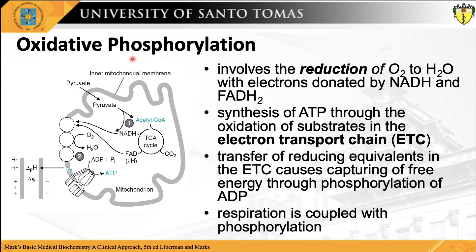Oxidative phosphorylation, on the other hand, involves the reduction of oxygen to water with electrons donated by NADH and FADH2. This type of phosphorylation involves membrane-bound enzymes and transmembrane gradients of protons, and occurs through oxidation of substrates in the electron transport chain — also known as electron transport-linked phosphorylation. It involves the transfer of reducing equivalents through the chain, producing energy captured via phosphorylation of ADP and inorganic phosphate to ATP, essentially coupling biological oxidation with phosphorylation.